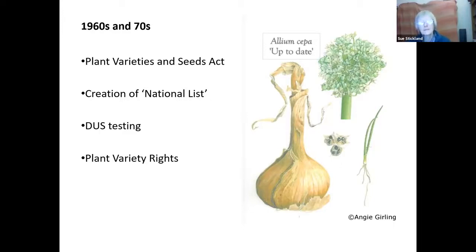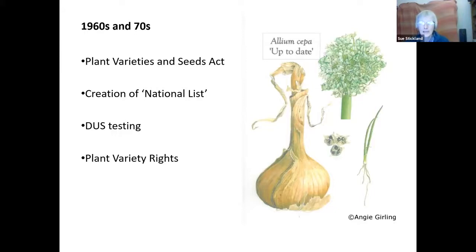A famous example: the onion 'Up to Date' was said to be a synonym of the better-known 'Bedfordshire Champion,' but the Ministry of Agriculture's own trials showed Up to Date was more disease resistant. The choice of synonyms was really very cursory, based often on external appearance. To add a variety to the national list it had to undergo a DUS test — Distinct, Uniform, Stable — and this testing is not only expensive but some old and local varieties are too variable to pass.